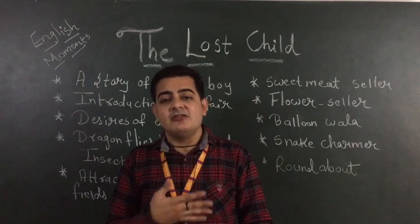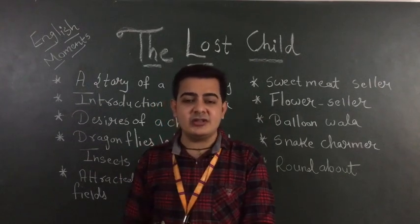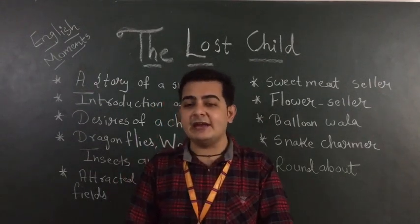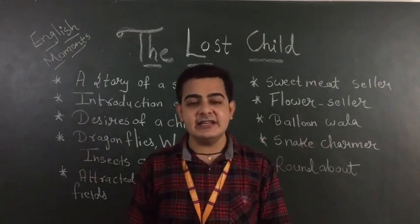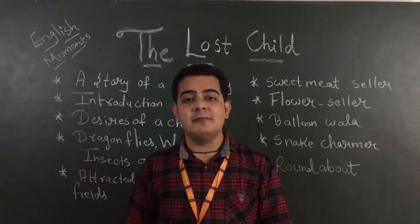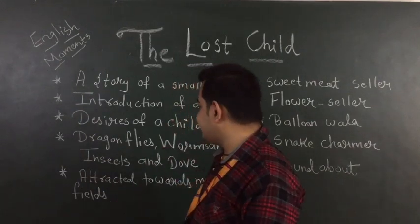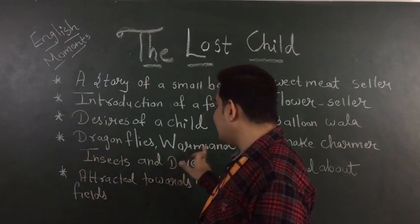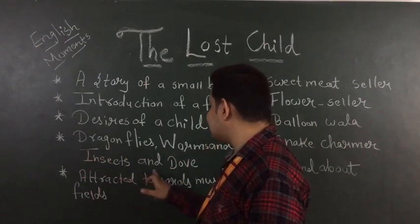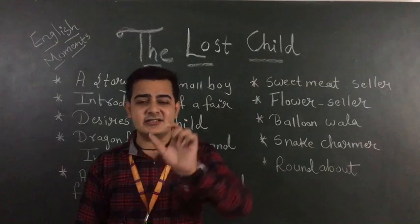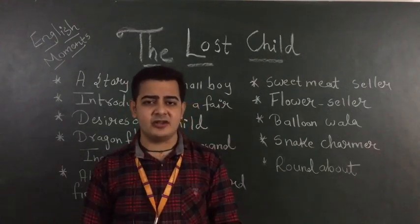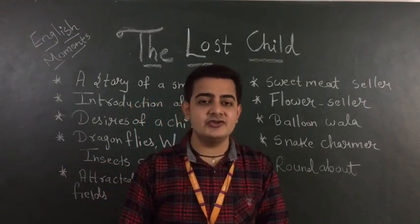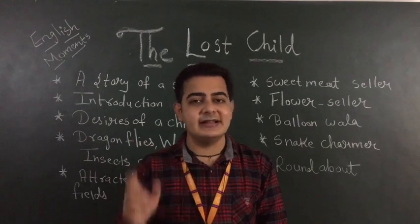Before entering into the fair, he saw many things. First there were dragonflies, worms, insects, and a dog. There are small points given about each of these. I am going to introduce you to them.